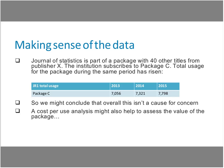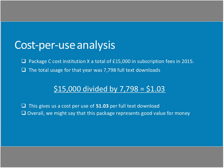We might also want to look at cost per use to help with evaluation. In this example, package C — the 40-title package — cost the institution $15,000 in subscription fees. Total usage for the year was 7,798 full-text downloads. Dividing the subscription fee by the usage gives us $1.03 as the cost per download. Overall, we might say this package represents fairly good value for money, even though one or two individual titles may not be performing as well as before.